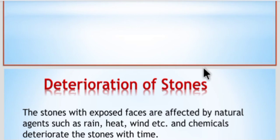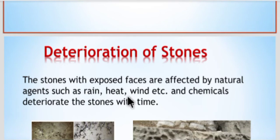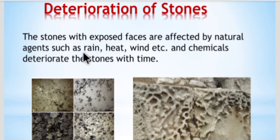Stone is a natural construction material, naturally available on earth. It is always exposed to the atmosphere. Due to natural agencies like rain, wind, and temperature — heavy wind, heavy rain, and high temperature — the stone will get deteriorated and damaged, making it unfit to use as a construction material. This is the deterioration of stones. Stones with exposed faces are affected by natural agents such as rain, heat, wind, and chemical reactions.